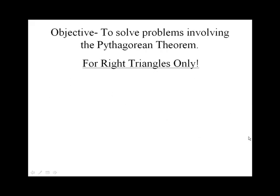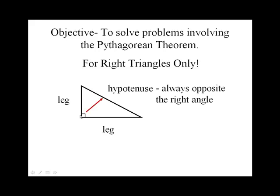Our objective is to solve problems involving the Pythagorean Theorem. Remember, the Pythagorean Theorem is for right triangles only. Here's a right triangle. Remember, a right triangle has a 90 degree angle. It has this is a leg, this is the other leg, and the one across from the 90 degree angle is called the hypotenuse. It's always opposite the right angle.